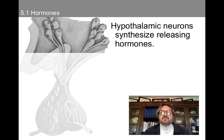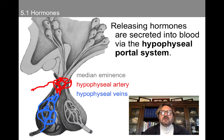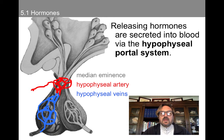Here are the hypothalamic neurons that synthesize the releasing hormones. We have the median eminence — this is where the axons converge above the pituitary stalk. Then we have blood vessels: the hypophyseal artery and the hypophyseal veins. Releasing hormones are secreted into the blood via the hypophyseal portal system — this isn't an area where the blood-brain barrier is particularly strong, and this allows for this transfer so that these hormones are able to easily enter the bloodstream.